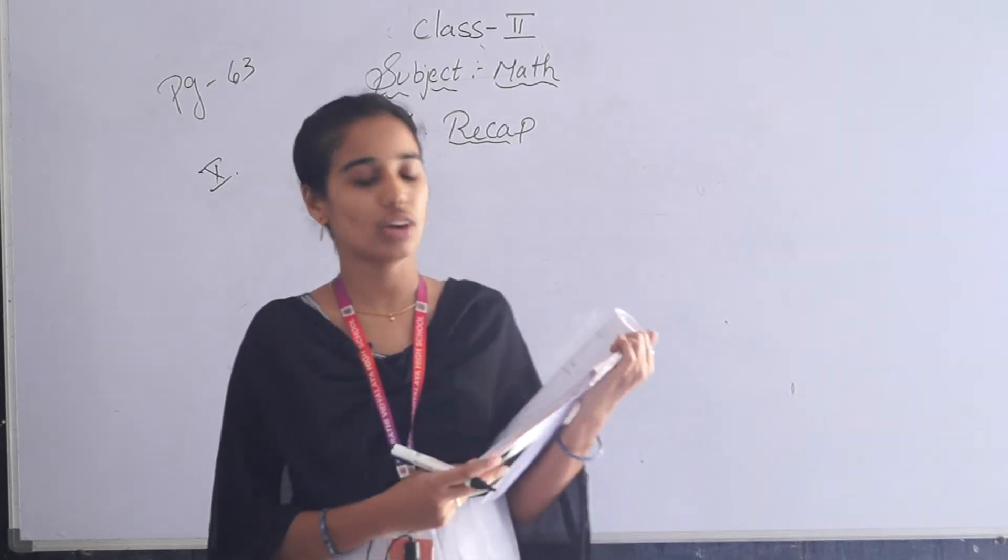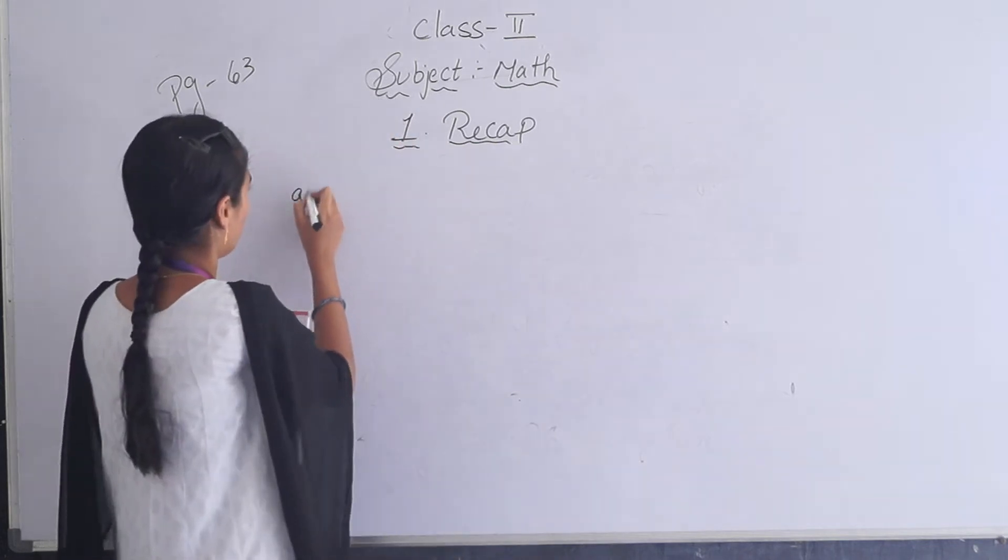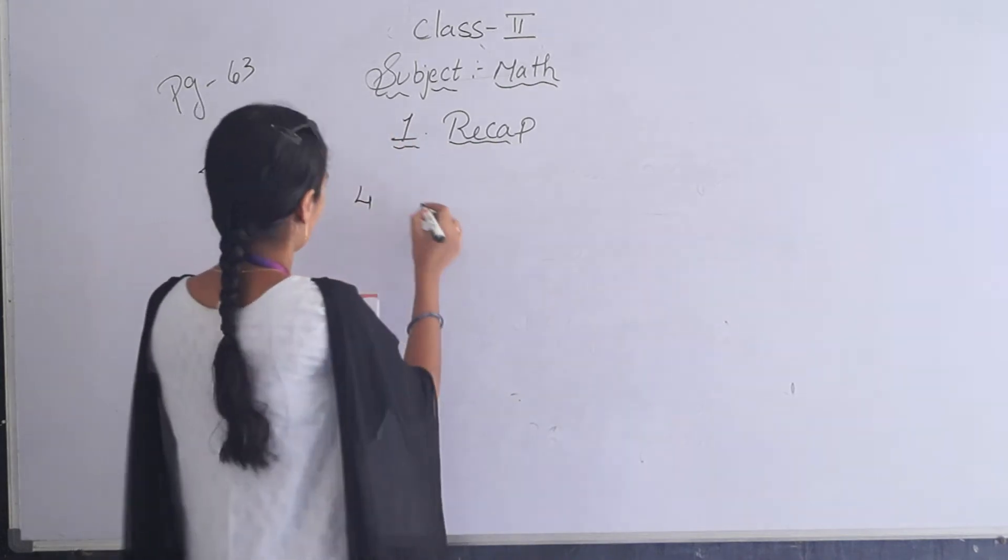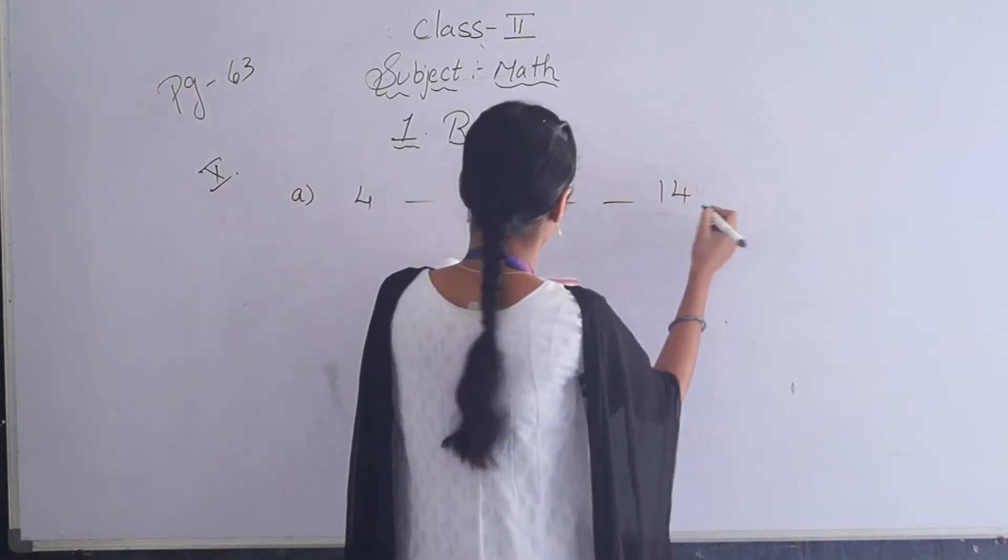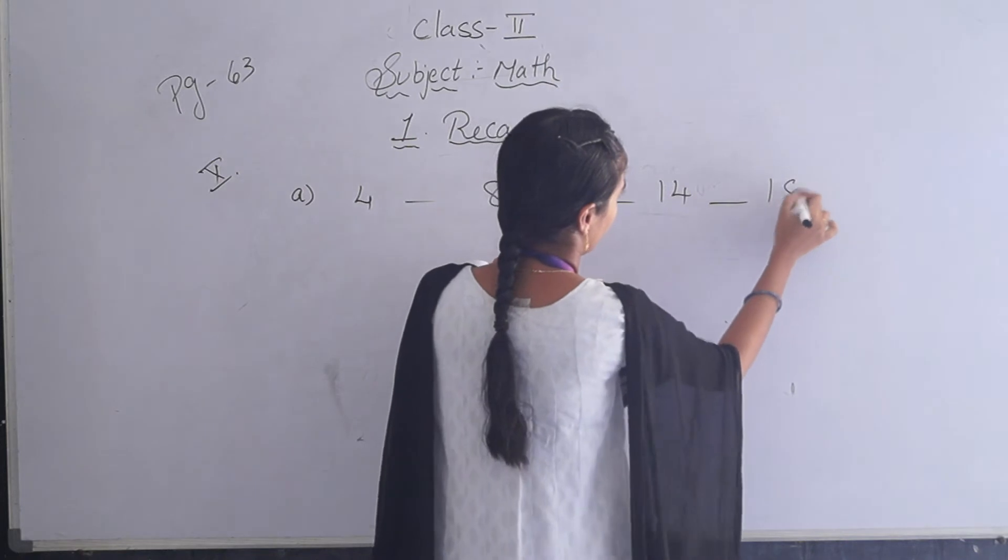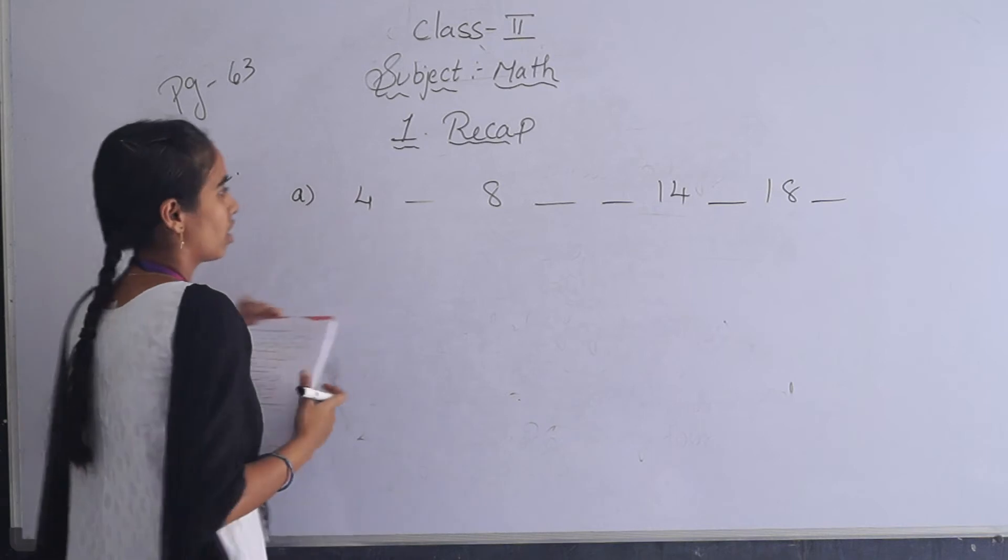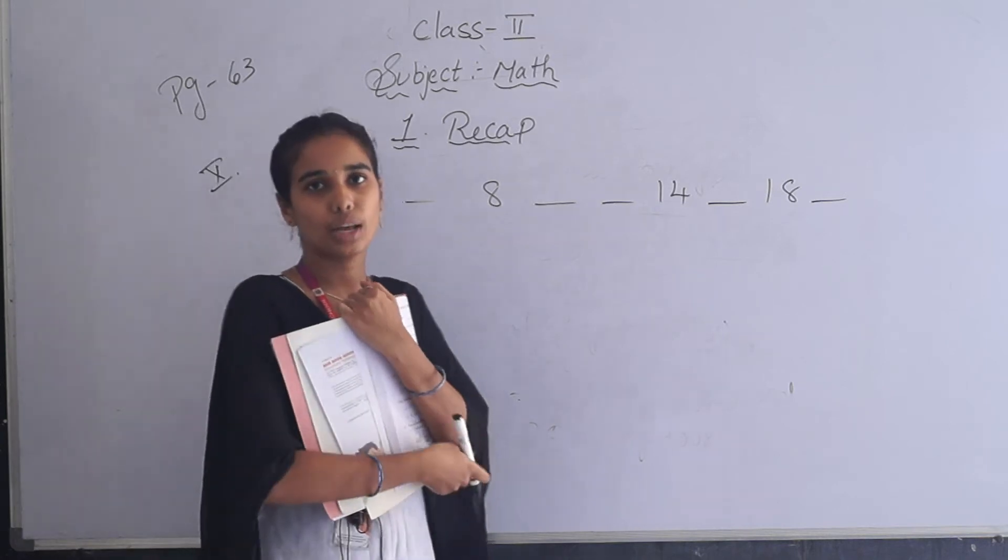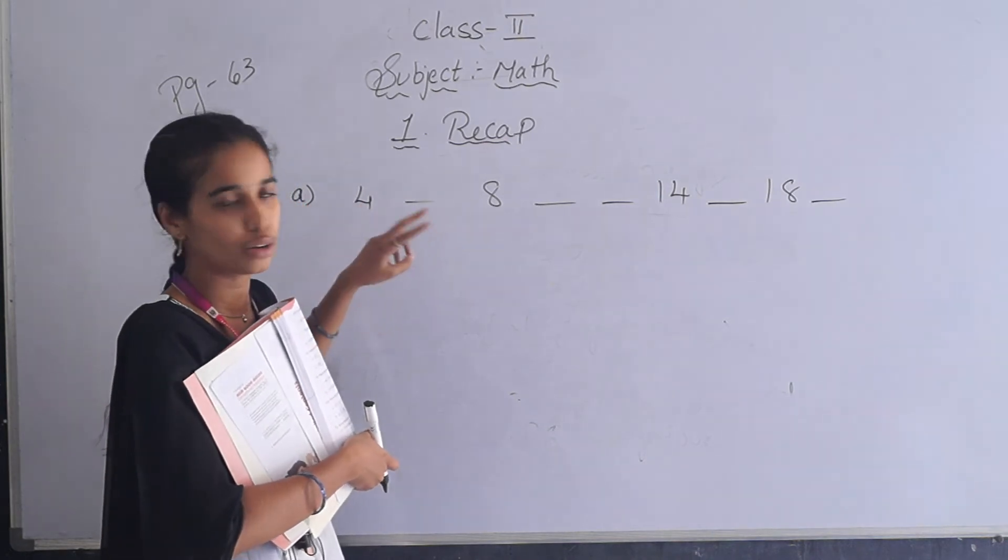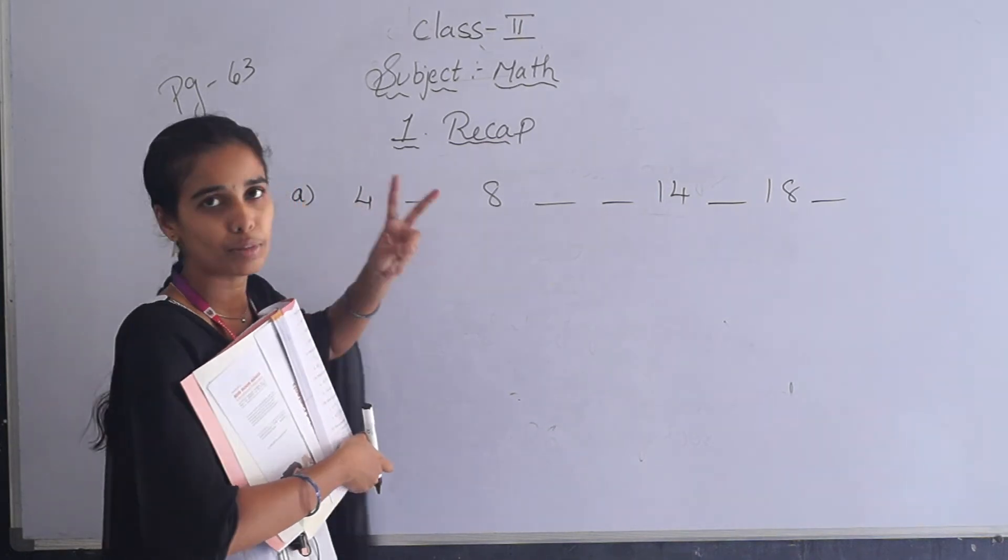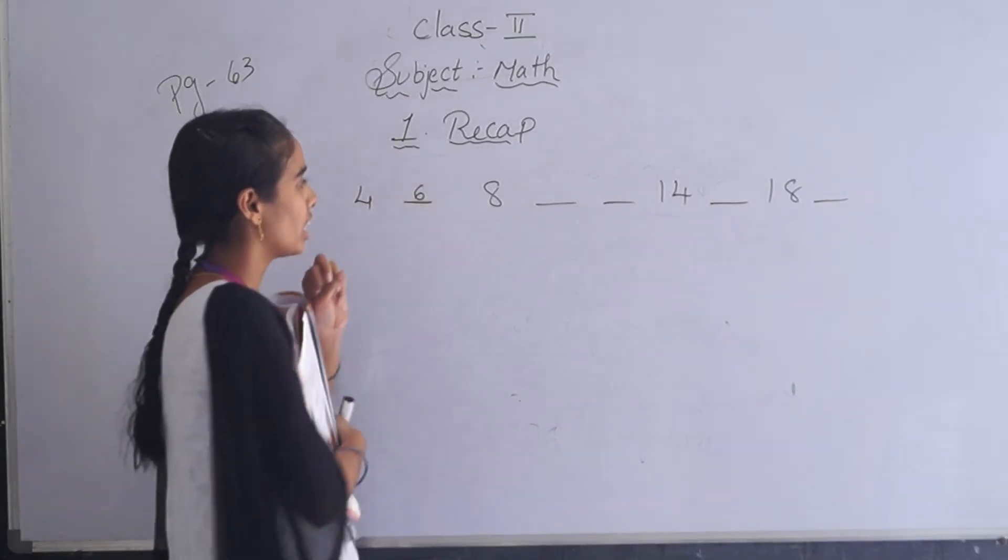2s means nothing but you have to add 2 to every number. First we have 4, next 8, 14, 8. You have to add 2 to numbers. Here we are having first 4, so you have to add 2 to 4. 4 plus 2 is 5, 6. So answer is 6.